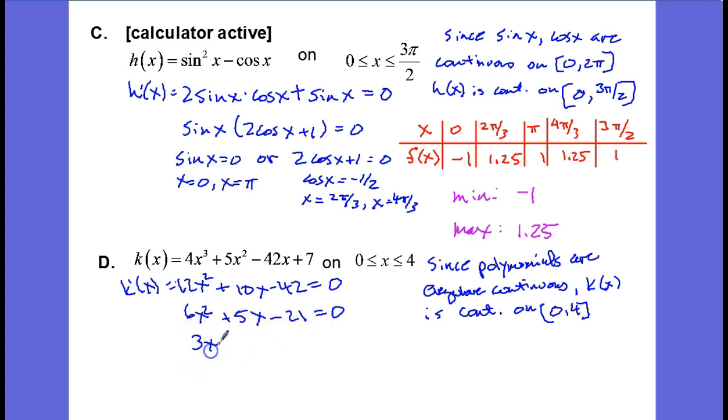We get 3x plus 7 times 2x minus 3 equals 0. Zero product rule, we set each of these equal to 0, we get x equals negative 7 thirds, or x equals 3 halves.